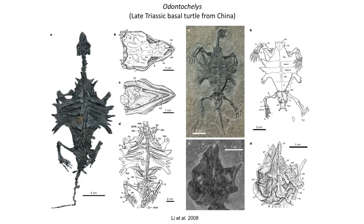During the Triassic, fossil turtles are rather rare, but in 2008 there was a fantastic fossil discovery in China — the half-shell turtle, Odontochelys. Odontochelys is a really cool transitional fossil, since it has a well-developed plastron or belly shell, while the ribs that form the carapace are not as well developed. The small fossil is found in marine deposits, indicating that it was aquatic.